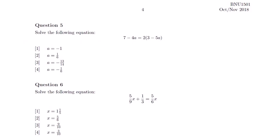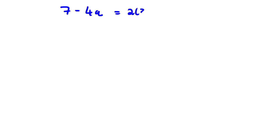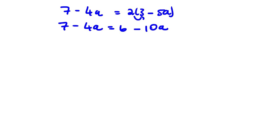Our next question is question 5. It says solve the following equation. Let us use the space so we have enough room to answer. The first thing we have to do is simplify the bracket. Let us rewrite the left-hand side: 2 multiplied by 3 gives 6, and 2 multiplied by negative 5a gives negative 10a.